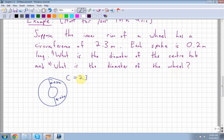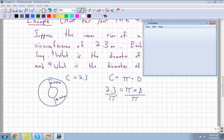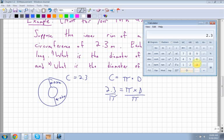What is the diameter of the center hub and the diameter of the wheel? If the circumference equals 2.3 and circumference equals π times diameter, then 2.3 equals π times diameter. To solve for diameter, I divide by π because multiplication and division are opposite operations. When dividing by π, don't use 3.14. Use the π button.